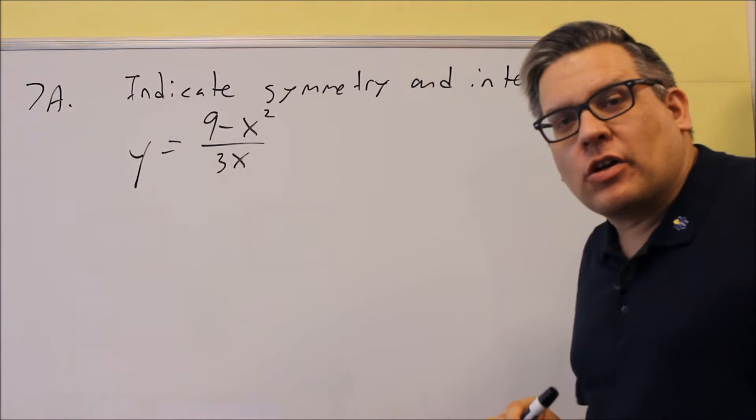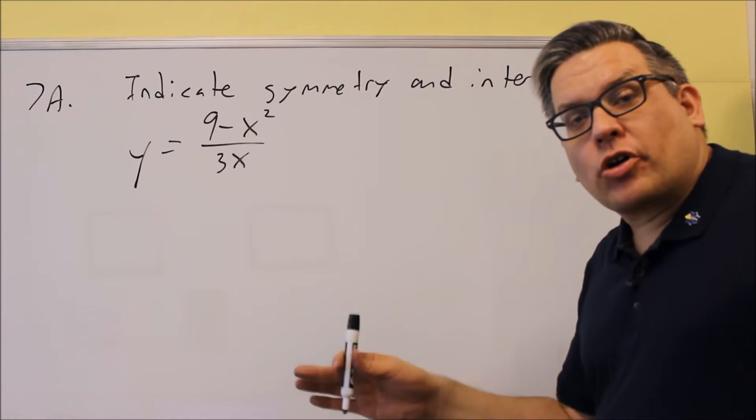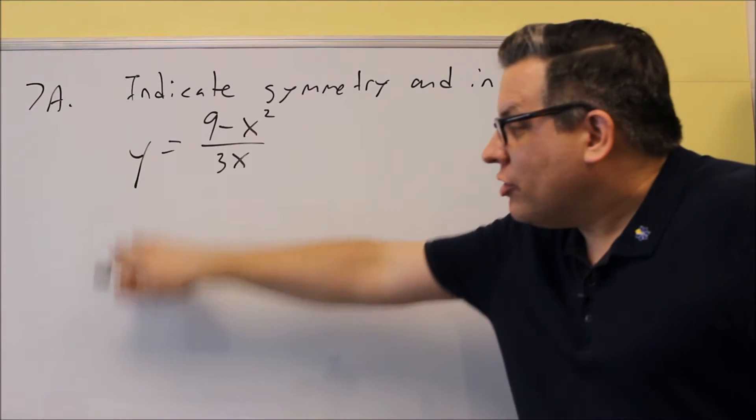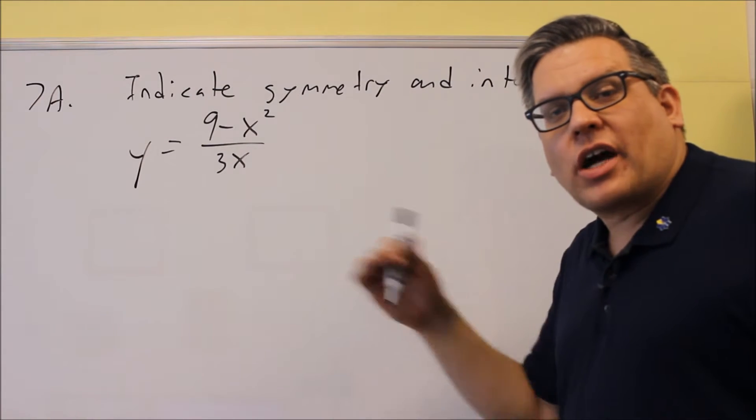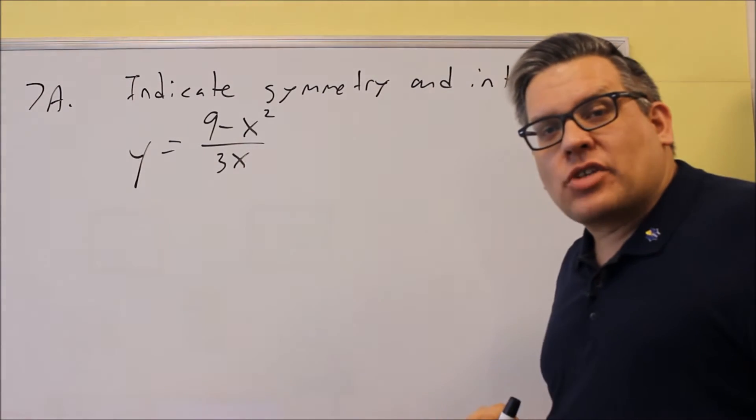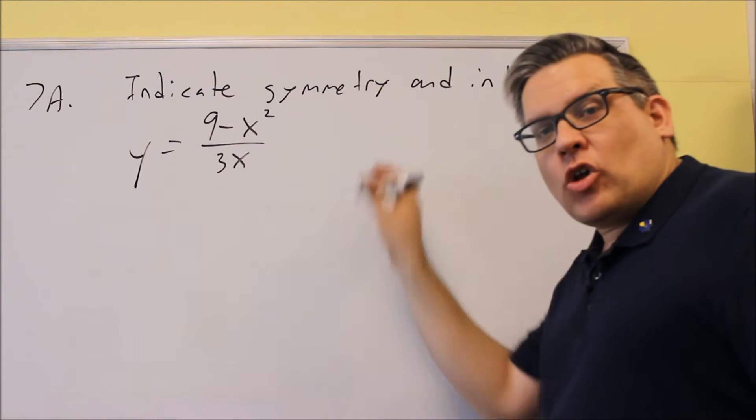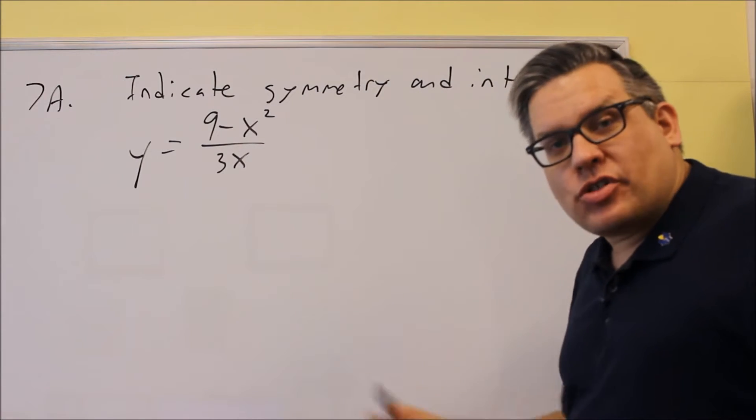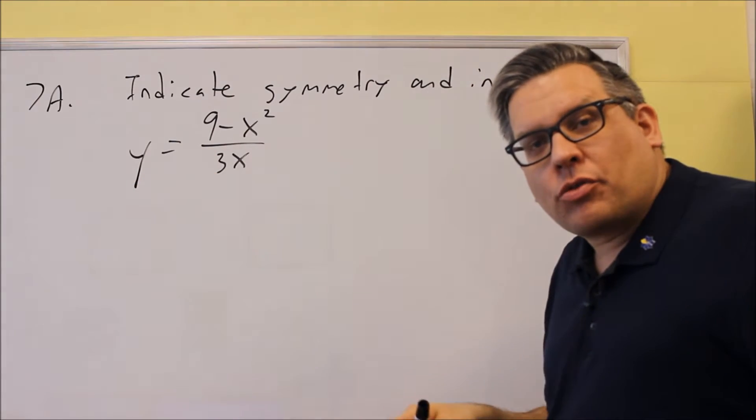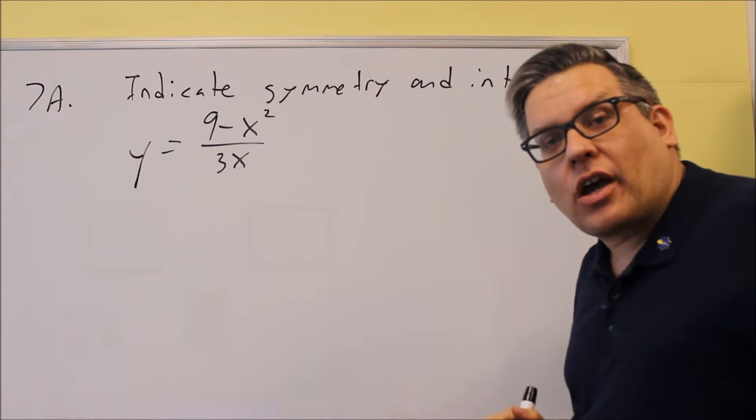We also have a procedure for finding intercepts. Now when you're doing this problem, I want you to clearly label your work. If I can't follow your work or if you have random equations all over and there's no organization to it, I'm going to take points off because part of it is showing logical work and logical steps all the way through. So make sure you show your work clearly and it's labeled so that I can follow it.